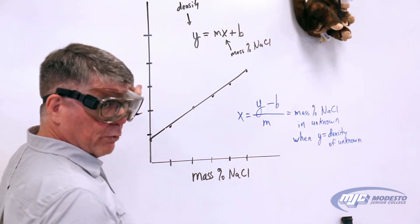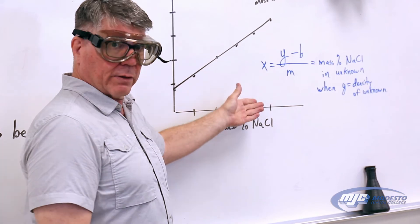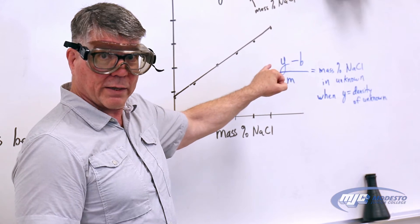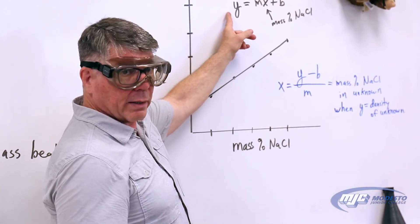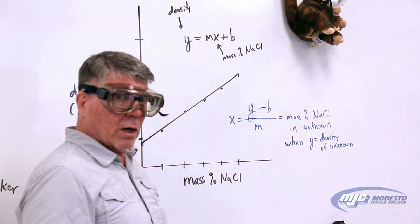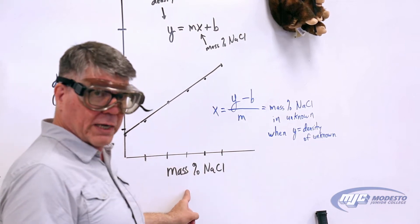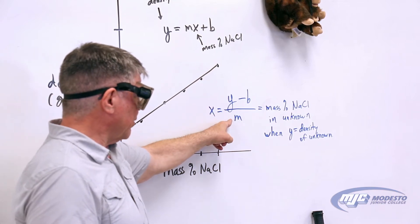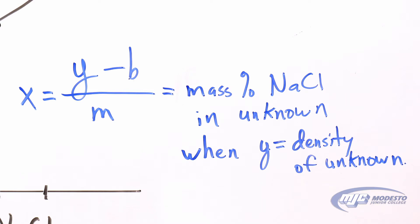What you guys are going to do is take that data and use a spreadsheet — it doesn't matter which one — to make this graph. All spreadsheets can graph that data and also draw the best-fit straight line and give you the equation of that line. What you get is an equation where m is the slope, which is some number your spreadsheet gives you, and b is the y-intercept. To use this, once you have the equation, you rearrange it to solve for x, because your goal is to find the mass percent sodium chloride in your unknown, which is x. You'll have the y-intercept b and the slope m from your spreadsheet, you'll know the density of your unknown, plug that in, and solve for x. That's what you're trying to find: the mass percent sodium chloride in your unknown solution.